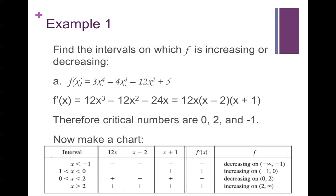Now we make a chart. On each interval, we check where the derivative is positive and negative. We can figure out that the derivative is negative on the first interval, positive on the second, negative on the third, and positive on the fourth. Therefore f is decreasing on the first interval, increasing on the second, decreasing on the third, and increasing on the fourth.